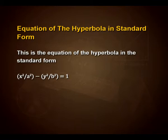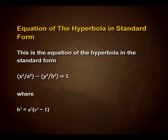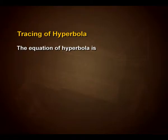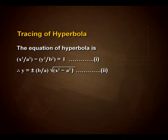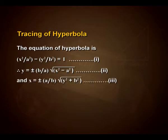Now let us look into the equation of the hyperbola in standard form. The equation is x²/a² − y²/b² = 1, where b² = a²(e² − 1). From this equation, y = ±(b/a)√(x² − a²) and x = ±(a/b)√(y² + b²).